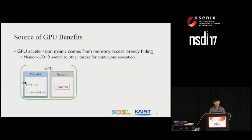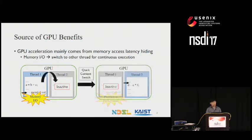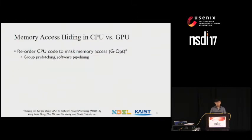More recently, researchers identified that the source of GPU benefits comes mainly from its fast hardware thread switching to hide memory access latency, rather than its high computation power. Whenever a particular thread meets a memory I/O instruction, the hardware scheduler inside the GPU quickly switches context to another thread to continue execution, thus avoiding memory I/O blocking with background prefetch. With this, they presented a framework named GOPT that simulates GPU's memory access hiding in CPU code.